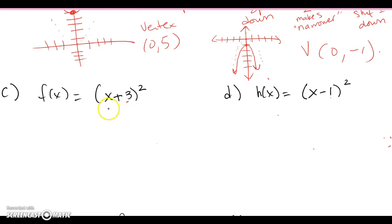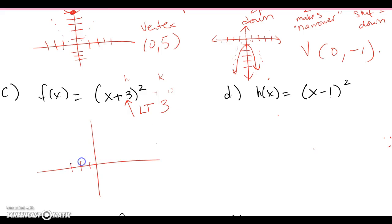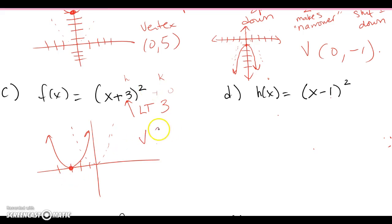For (x + 3)², the plus 3 is inside the quantity squared, so this is counterintuitive — it moves left 3. This is the h spot and there's nothing for k, so think of it as plus 0 for the k value. It's a basic parabola y = x² shifted left 3 units. The vertex is at (-3, 0).